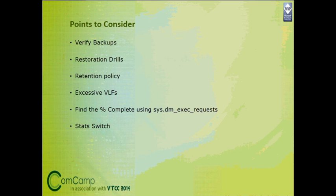Smart backup avoids taking unnecessary backups when not even a single change has been made to the database. In the current model, we schedule jobs to keep taking backups on a fixed schedule regardless of whether data has changed — wasting resources and storage. With smart backup enabled, it is flexible: you can configure it for a single DB or for the complete instance. You specify just a few switches, and it determines the backup type and frequency automatically.